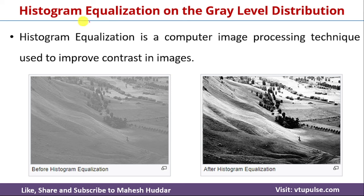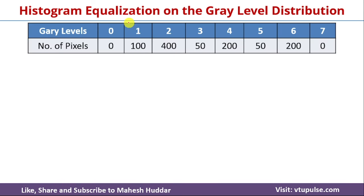Now we will take a simple example to understand how histogram equalization is performed in image processing. Let us say that there is an image with 8 gray levels, that is 0 to 7. We have been given the number of pixels for each of those levels: for level 0 we have 0 pixels, for level 1 we have 100 pixels, for level 2 we have 400 pixels, and so on. Given this image, we want to perform histogram equalization.